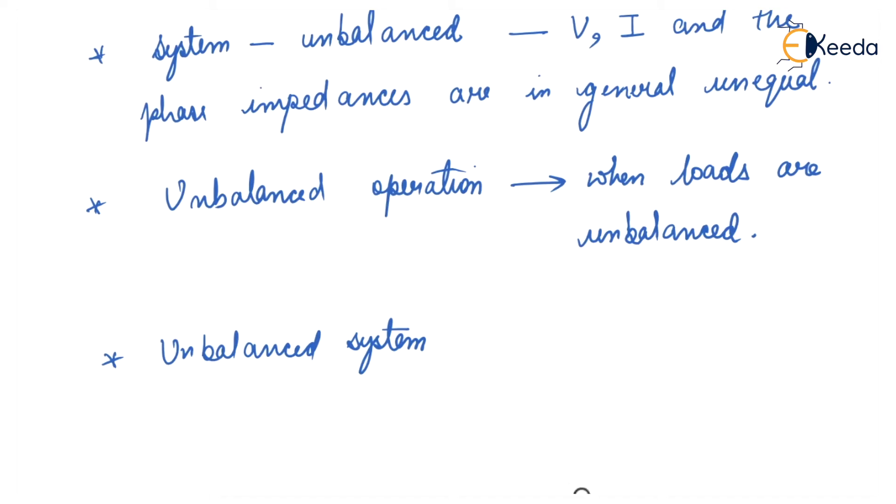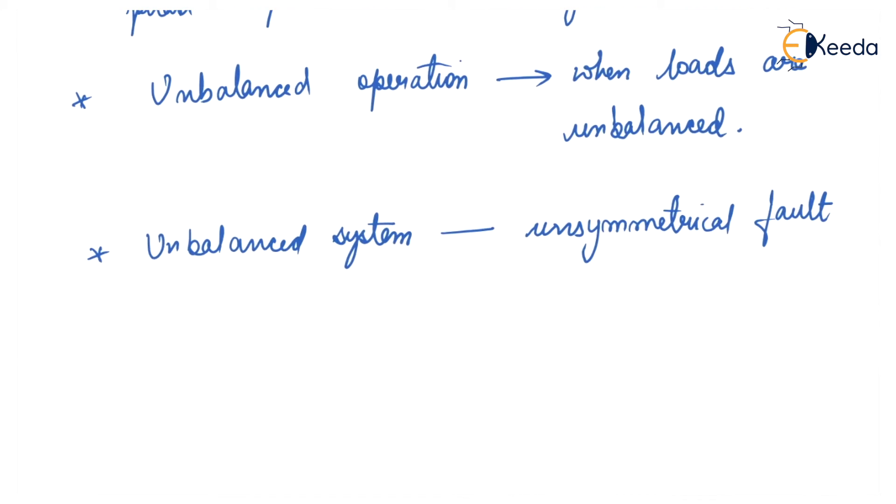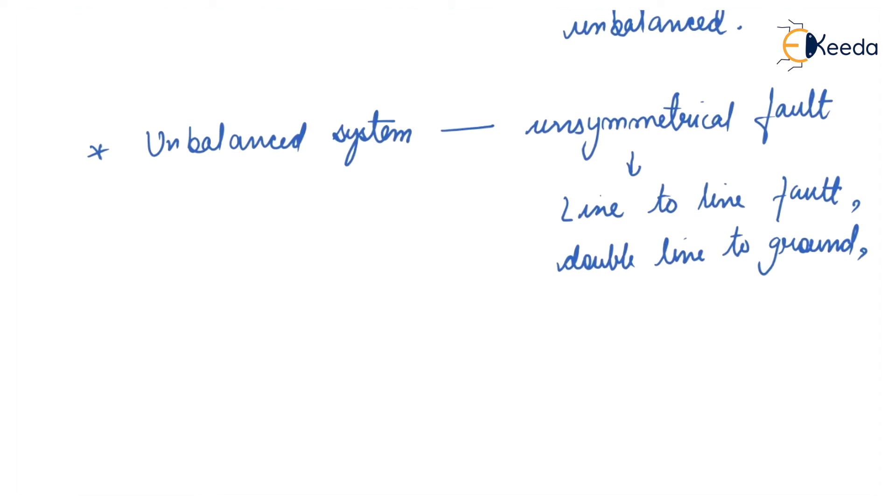An unbalanced system can result due to unsymmetrical faults. And what are the unsymmetrical faults? Line to line, double line to ground, or single line to ground fault.